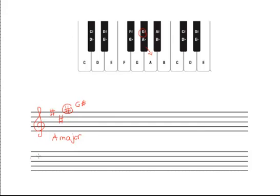Let's do another example in the bass clef. This example is going to have six sharps. Again, we take the last sharp in the key signature. This time it is an E sharp. E sharp is the same as an F on the keyboard. We go up one semitone from our last sharp, and that takes us to our key: F sharp major.